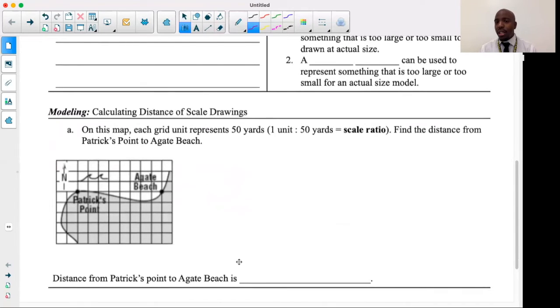For example, on a map, each grid unit represents 50 yards and the actual unit rate or scale ratio here is one unit to 50 yards. That's our scale ratio, one unit is equivalent to 50 yards. They want us to find the distance from Patrick's point on this map to Agate Beach. Now you and I both know a map does not really calculate the exact distance, even though I can calculate how many units this is, I know that's not the real distance from this space. What I want to do first is actually draw myself a fraction to represent the scale ratio.